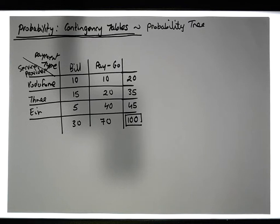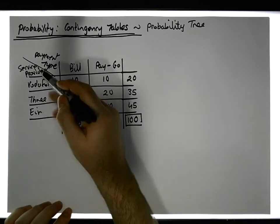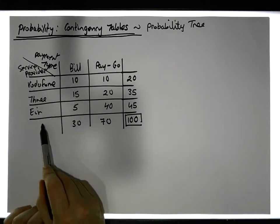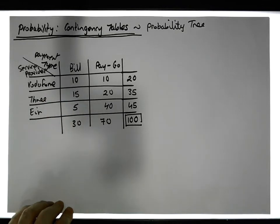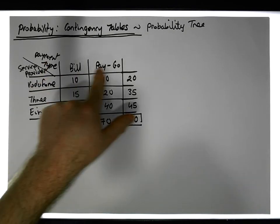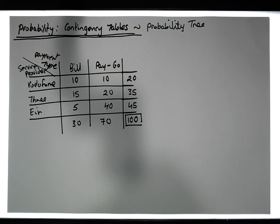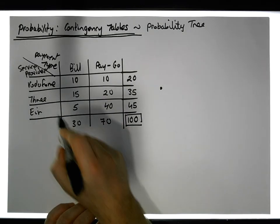In this particular instance I want to create a probability tree. The first question is: which categorical variable represents the root? There are two variables here — service provider with its number of categories, and payment type with its number of categories. We could let the service provider represent the root, or the payment type. Let's take service provider as the root.